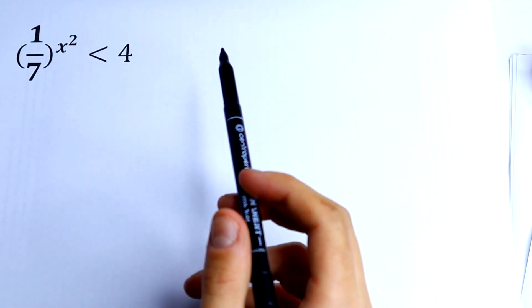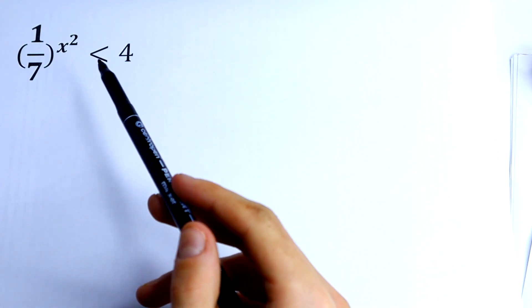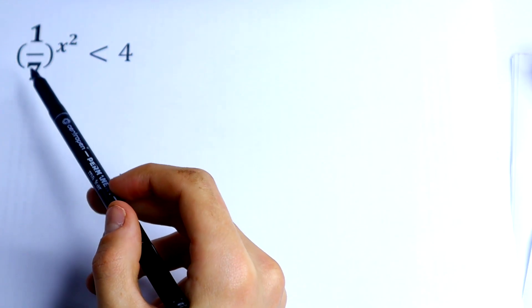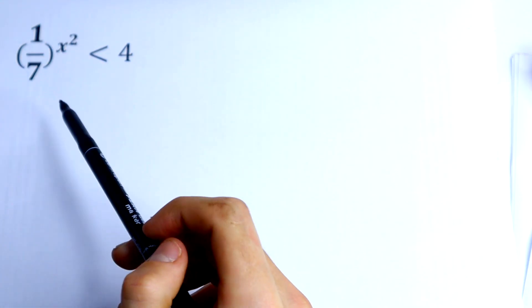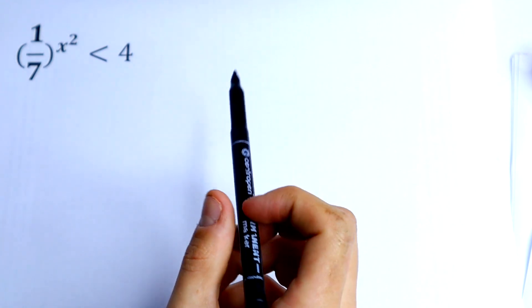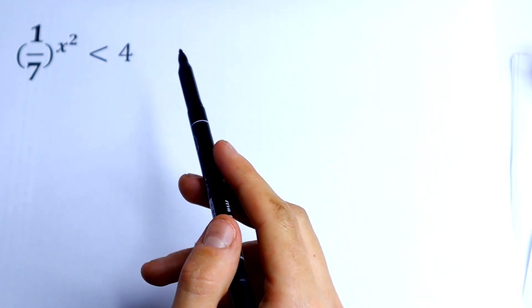Hello everyone and welcome back to MathMood. Here we have one interesting inequality: 1 over 7 to the x squared power is less than 4. So how can we solve this?